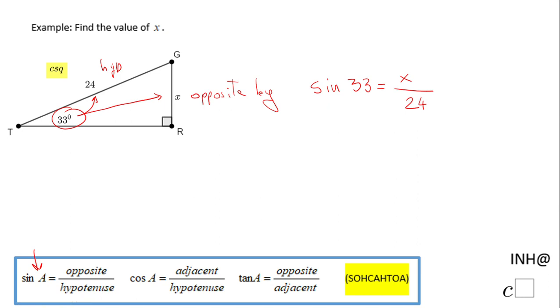The simplest way to solve for x is to get rid of that 24, so I'm gonna multiply by 24 on both sides. As you notice, this 24 cancels out, and we end up with x equals 24 sine of 33.